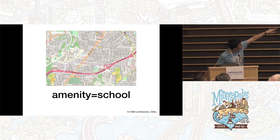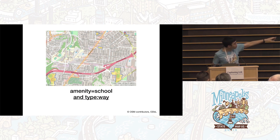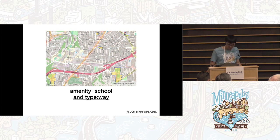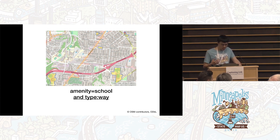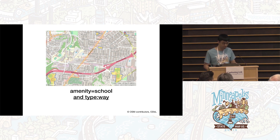You can see there are a couple of dots that were marked as schools mapped as just points. Those go away when I add 'and type:way'. You can set the type operator to node, way, or relation, depending on the type of elements you want. Or you can leave it out if you don't know or don't care.